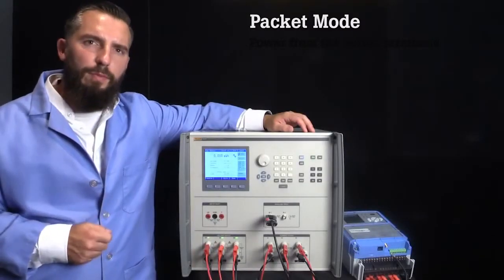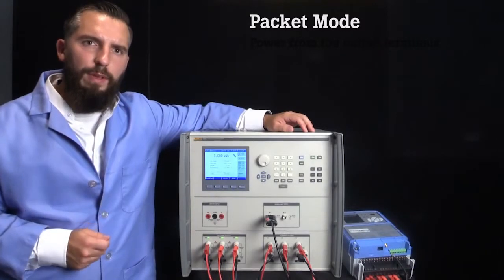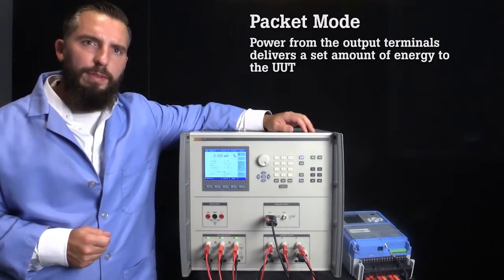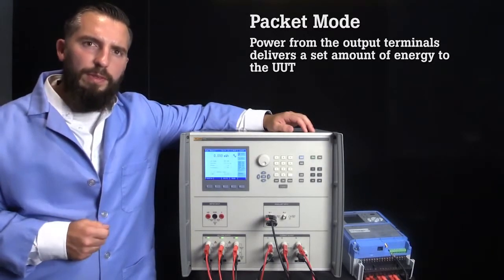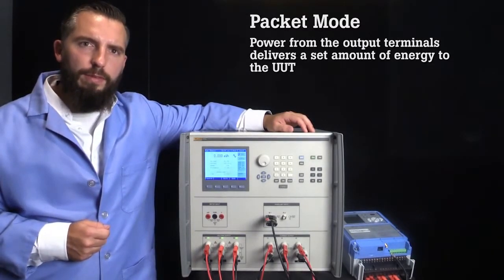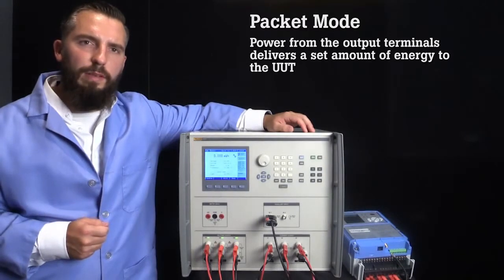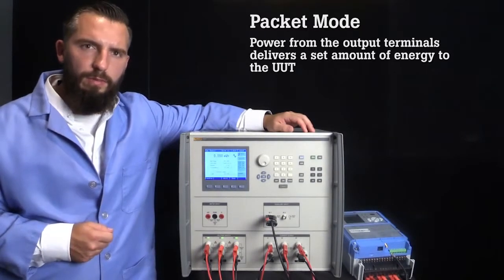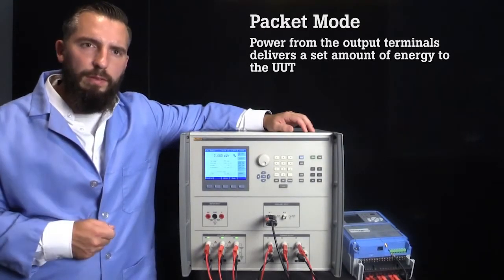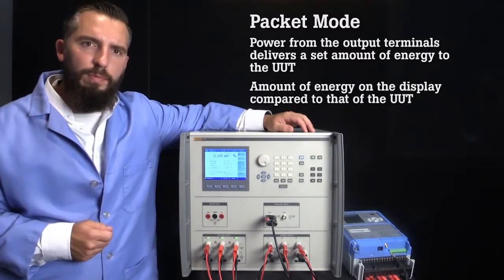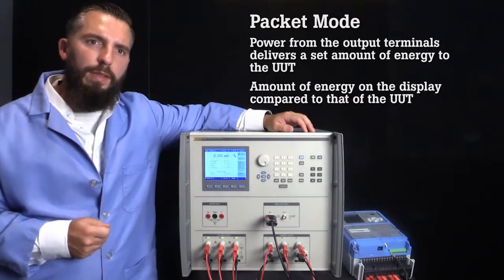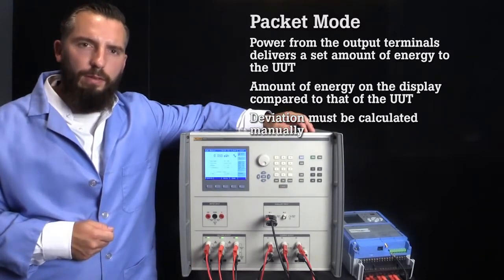In packet mode, which is also known as dose mode, the power from the output terminals is timed to deliver a set amount of energy to the meter under test. This method is not as accurate as the other methods because the start-up time of the 6003A is not synchronized with the UUT, but it is the simplest. To test the accuracy of the meter, the amount of energy shown on the display will be compared to that of the energy meter and the deviation must be manually calculated.